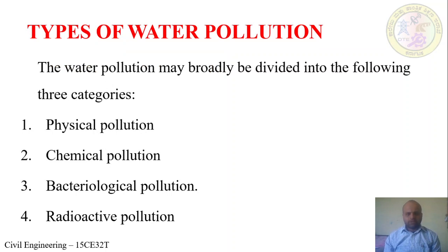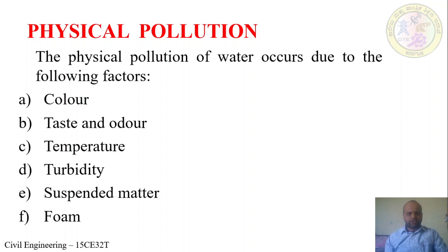Water pollution is broadly divided into the following four categories: first is Physical Pollution, second is Chemical Pollution, third is Bacteriological Pollution, and fourth is Radioactive Pollution. We will now discuss the first category — Physical Pollution. Physical pollution of water is due to the following factors: Color, Taste and Odor, Temperature, Turbidity, Suspended Matter, and Foam.